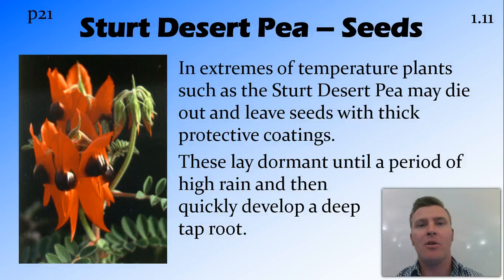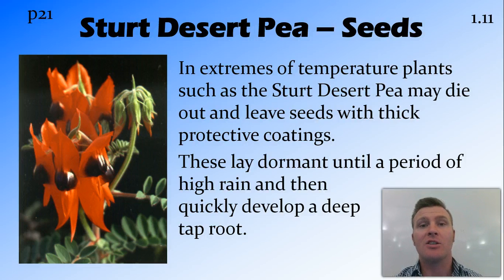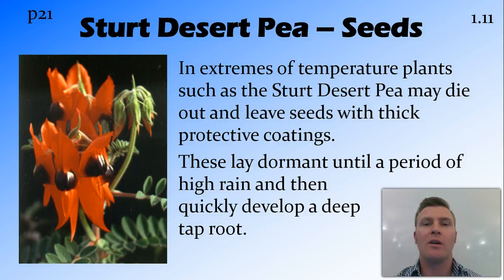Another example is that some plants have tough seeds that can lay dormant for a long period of time. An example is the Sturt desert pea — the plant above the ground can totally die off, and these seeds will remain until water starts flowing again, at which point they'll quickly develop a deep taproot.